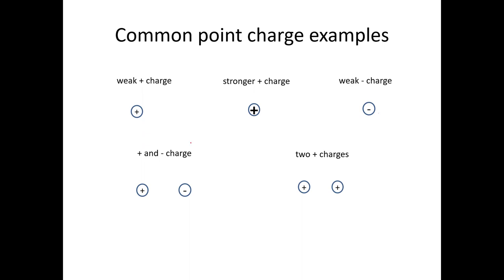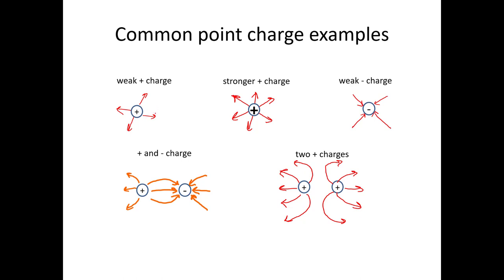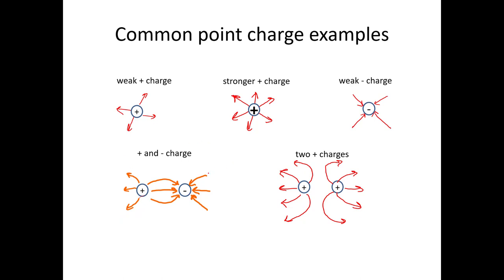Draw what you think these electric field diagrams would look like — pause the video, then come back and check your answers. A weak charge has fewer arrows; a stronger charge has more arrows. Both positive charges have arrows facing away. A negative charge has arrows facing inward — fewer if it's weak. When you see interactions, the field goes away from the positive and towards the negative. With two positives, arrows go away from both, and a positive charge placed nearby would make its way around toward the negative at some point.